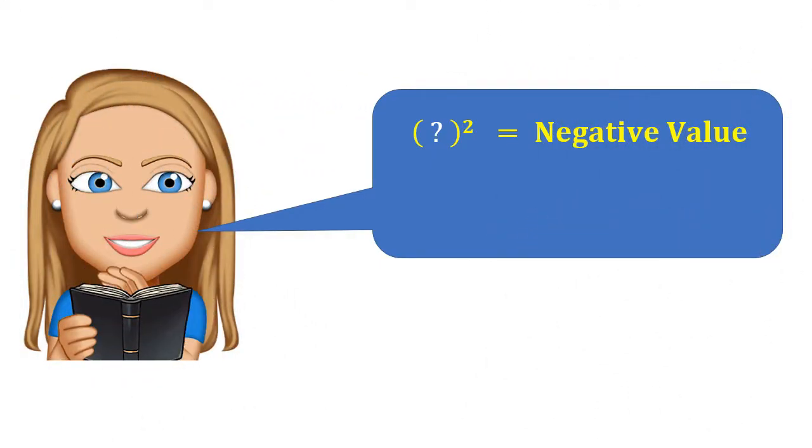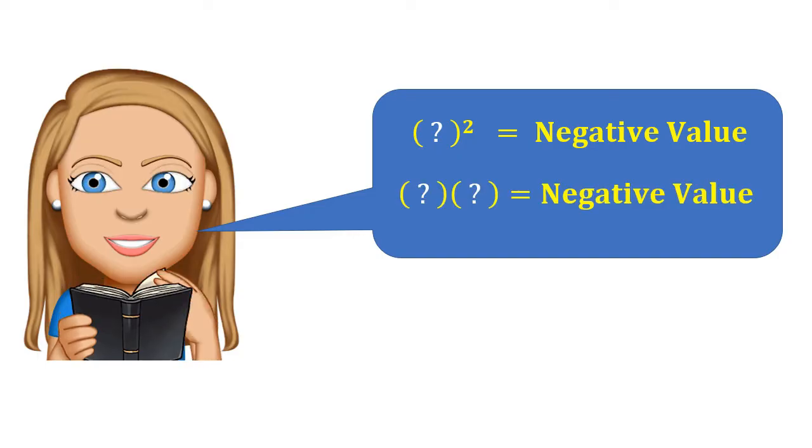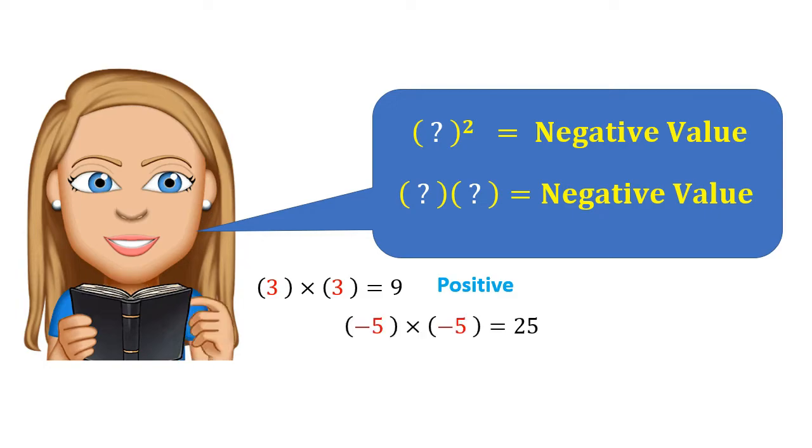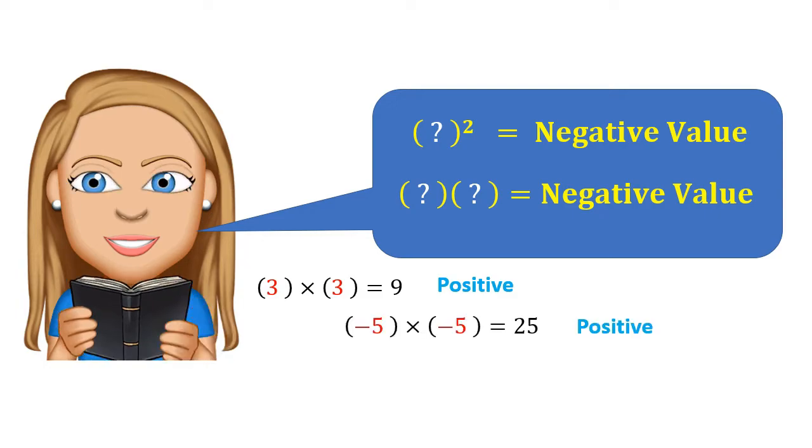Can you think of a number which when squared results in a negative value? Yes, a number which when multiplied with itself is a negative value. Let's try it. You would have probably tried a few options, for example. 3 times 3 is 9, which is positive. Negative 5 times negative 5 is 25, again positive.